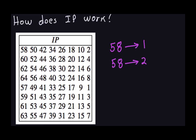So whatever is in position 58 goes to position 1, position 50 goes to position 2, position 42 goes to position 3, and so on. That's how this table tells you how to transform the plain text 64-bit block into the permuted 64-bit block in the initial permutation.